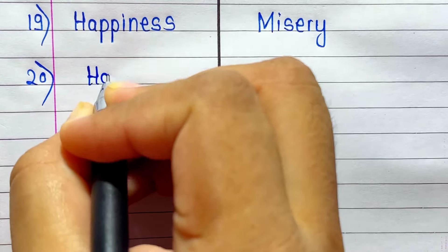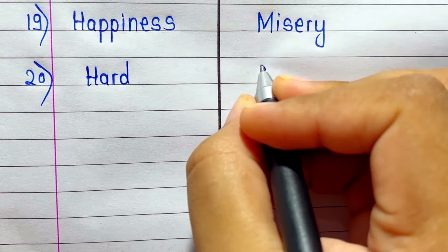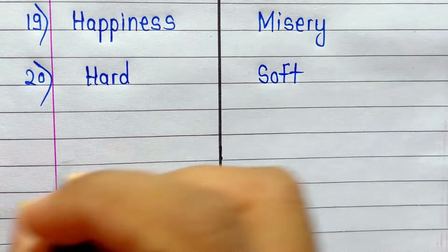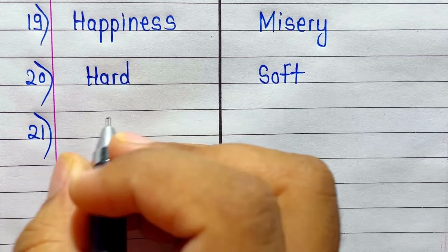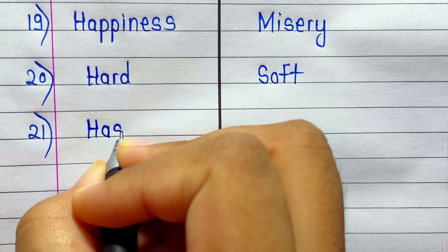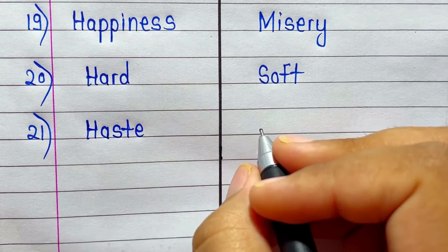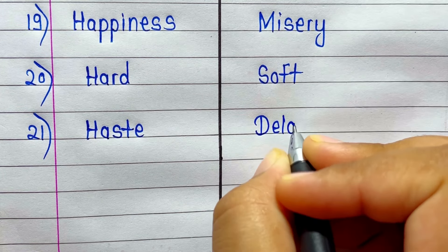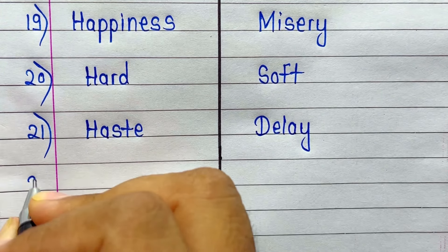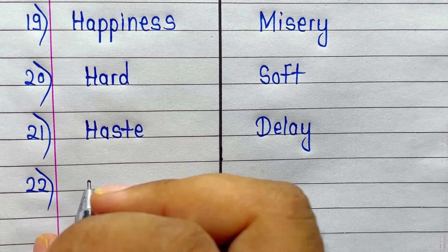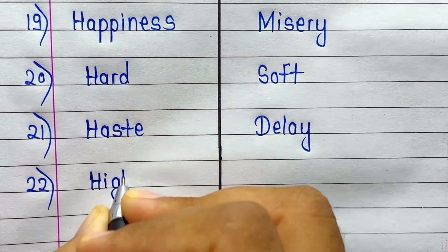Hard. Antonym of Hard is Soft. Haste. Antonym of Haste is Delay. High. Antonym of High is Low.